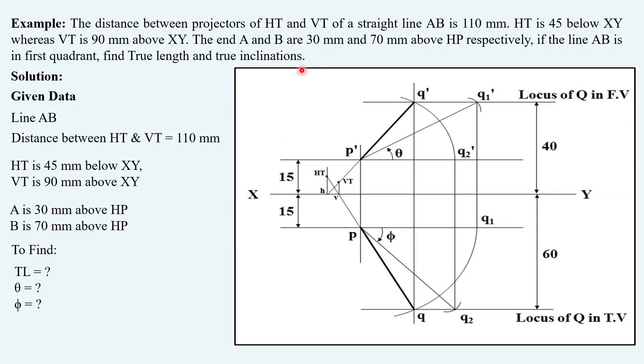Let's try to understand this given data by putting it on this normal solution. So we have this HT projector and VT projector. The distance between these two is given as 110 mm. This solution is not applicable here as is; we are just trying to understand what is given to us.